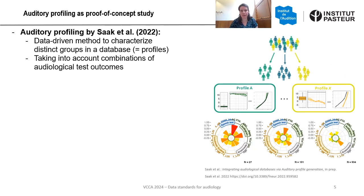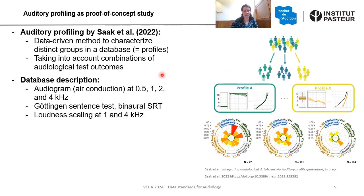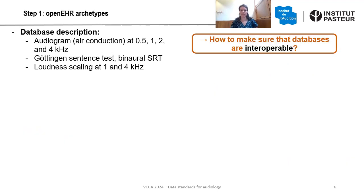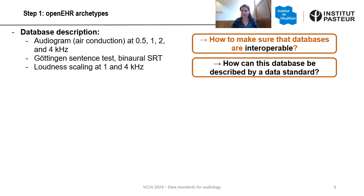In this talk I would like to explain the methods of OpenEHR along with our example of auditory profiling, which is a method presented at ISAC 2022. This method aims to characterize distinct groups in the database by so-called profiles, and these profiles exhibit differences in different dimensions of audiological tests — for example audiogram, speech test, and loudness scaling. As we would typically do as a database description, we would give for the audiogram the measured frequencies, indicate which speech test we did — maybe a binaural SRT — and perform some loudness scaling with narrowband noises at 1 and 4 kHz. However, if we want to compare with another database, how can we make sure that databases are interoperable?